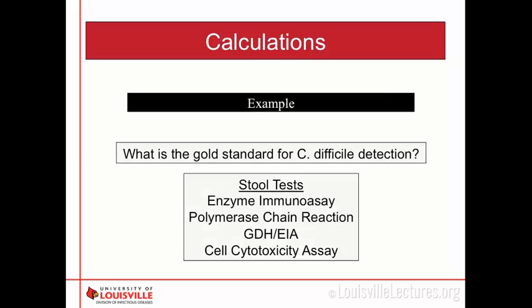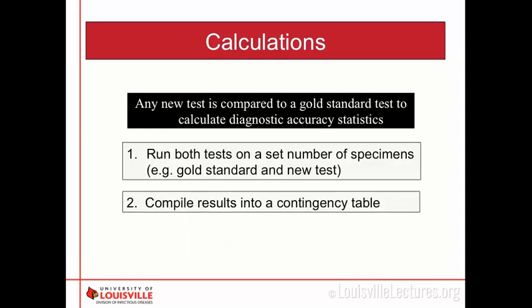You want to know what the gold standard for C. diff detection is. There are several stool tests — there's the enzyme immunoassay and the PCR test. You just pick which test you want to run it against. After you run your test, you compile your results into a contingency table.